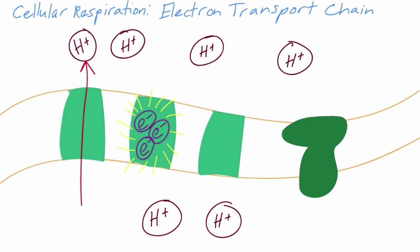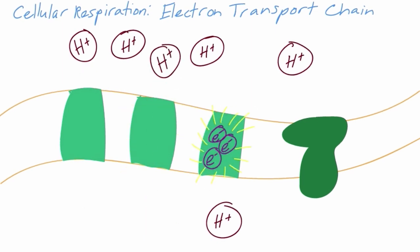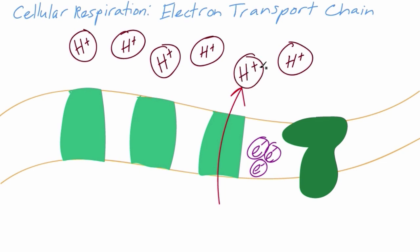The electron is passed along to several proteins. As a result, there is a high concentration of hydrogen ions on one side of the membrane. The cells in our body want the concentration of substances, such as hydrogen ions, to be at equilibrium. In order to re-establish equilibrium, the hydrogen ions want to move back to the opposite side of the membrane.